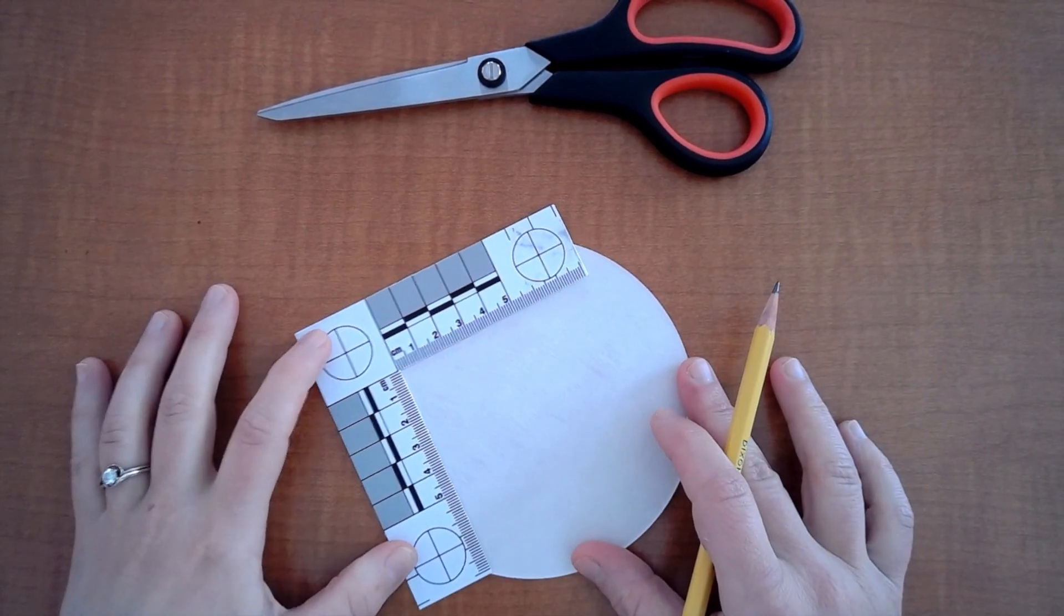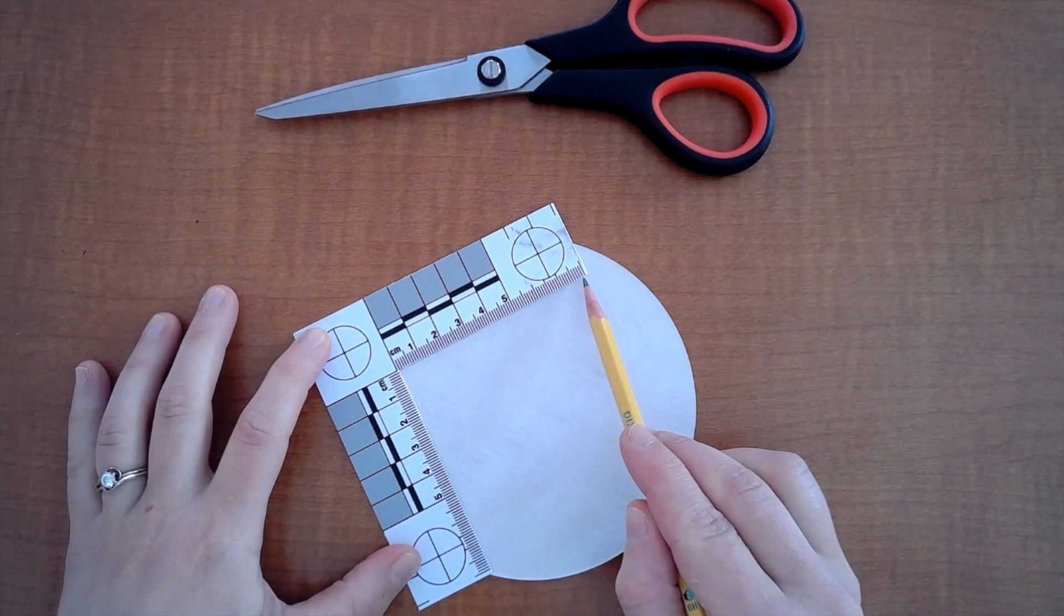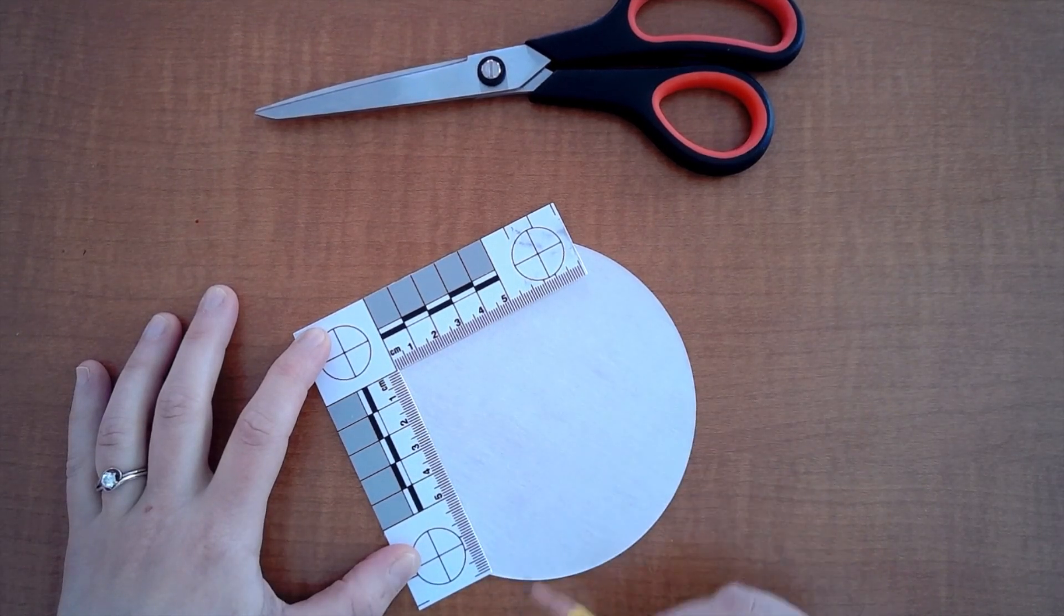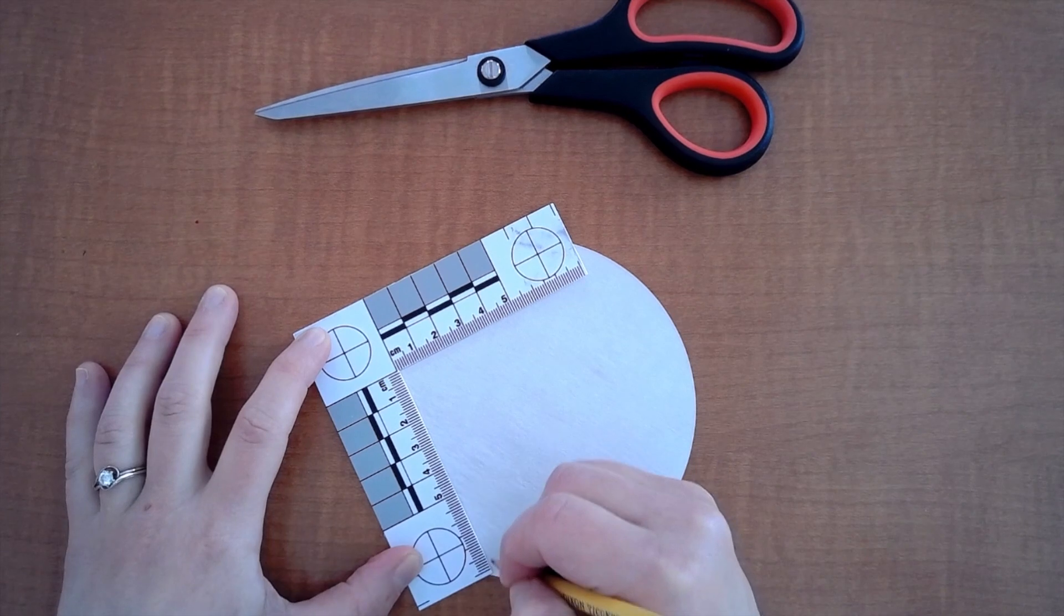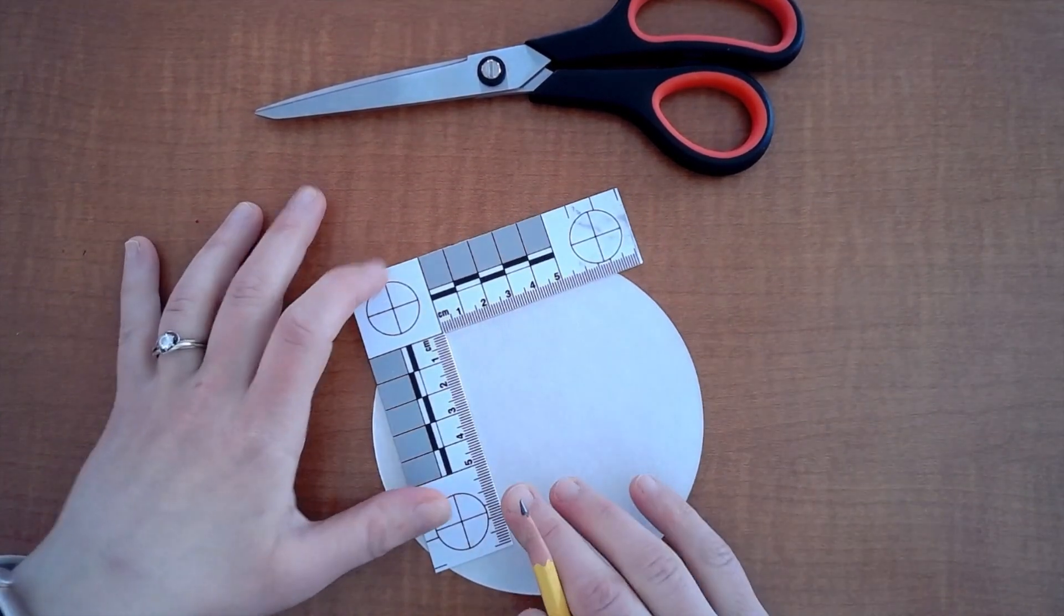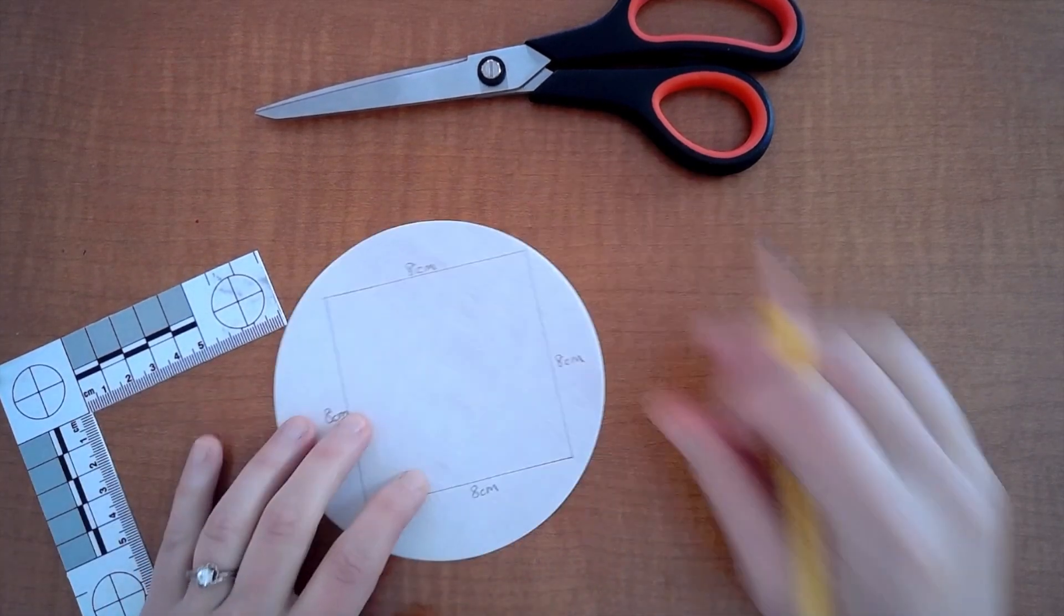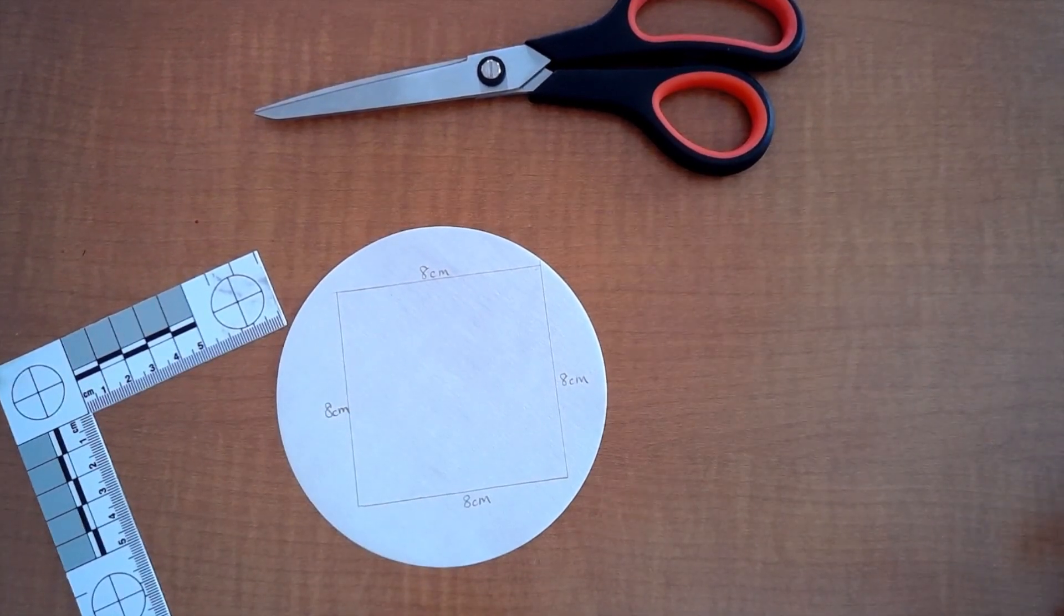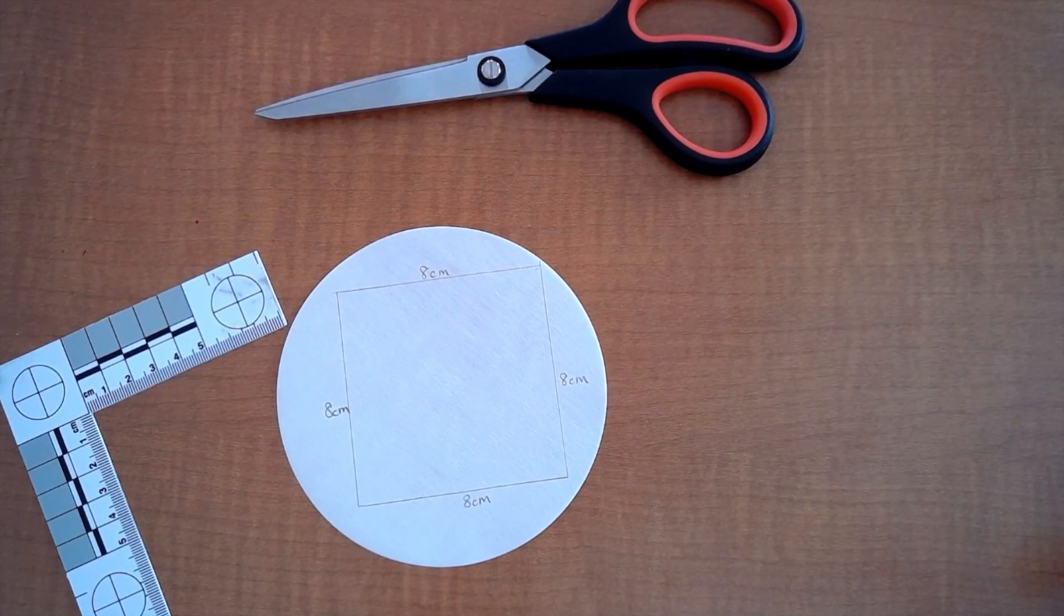Why is this L-shaped ruler amazing? Well because from here to here is actually eight centimeters and from here to here is eight centimeters. So if you trace the L on one side and then move it around and trace you will get an eight centimeter by eight centimeter square.